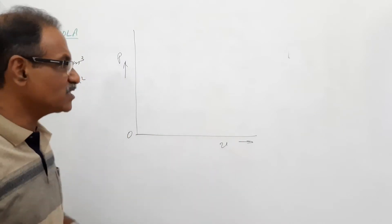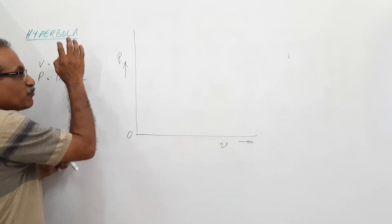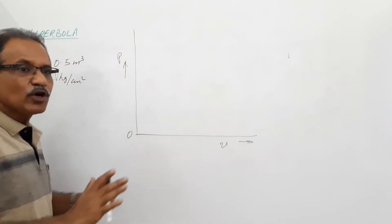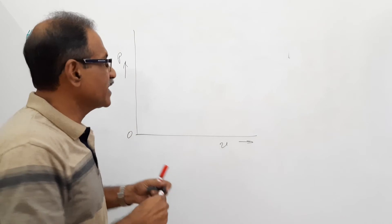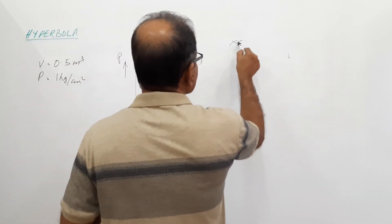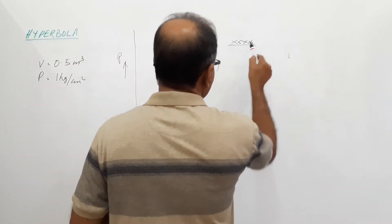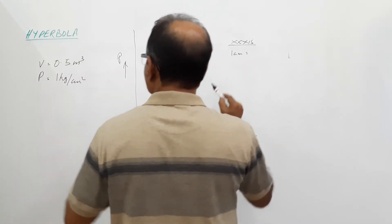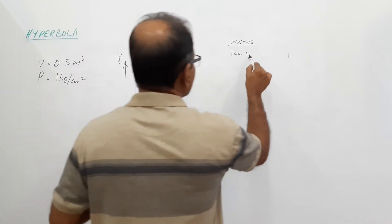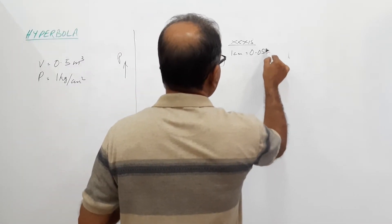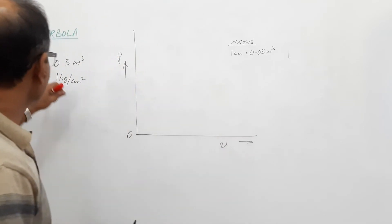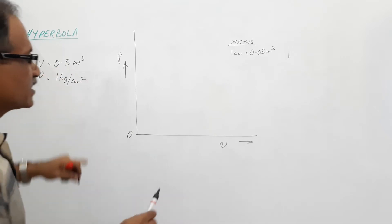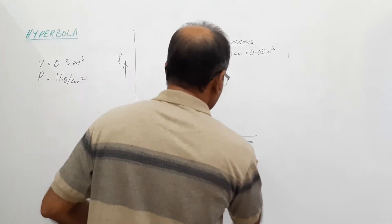You have to fix up a relationship between volume and the X-axis, and also the relationship between pressure and the Y-axis — fix that scale first, then you can draw. For the X-axis, 1 centimeter along the X-axis equals 0.05 meter cube. Our point is at 0.5 meter cube, so it is 10 centimeters away. Draw a vertical line there.